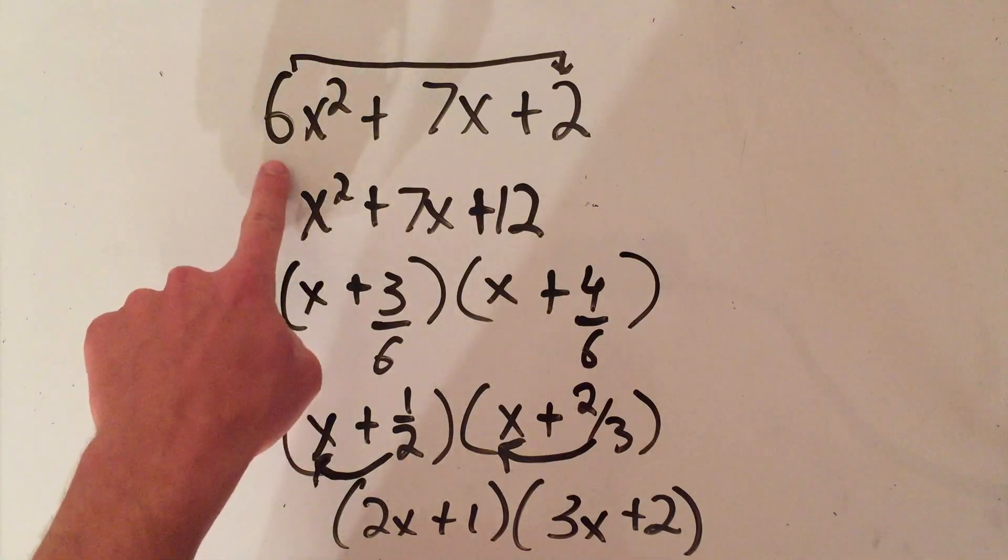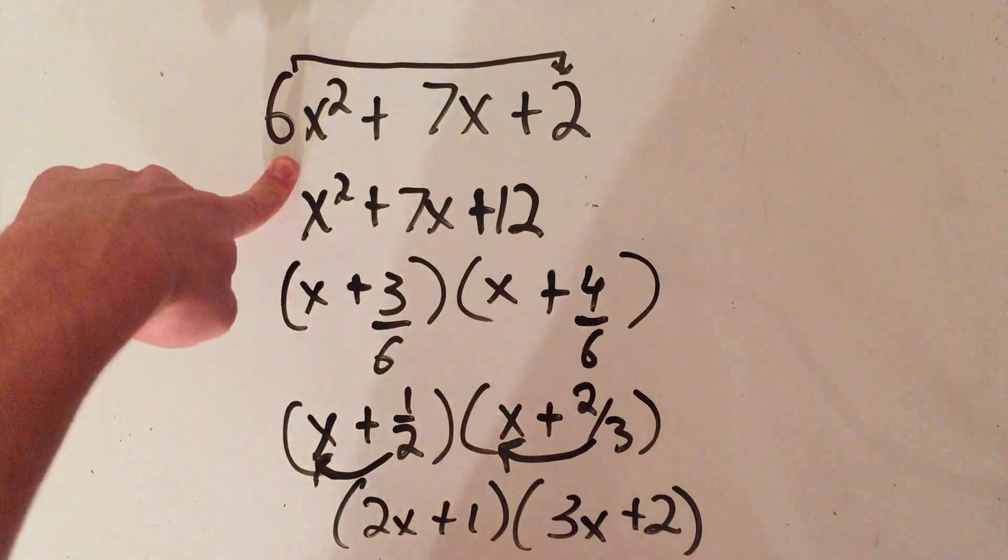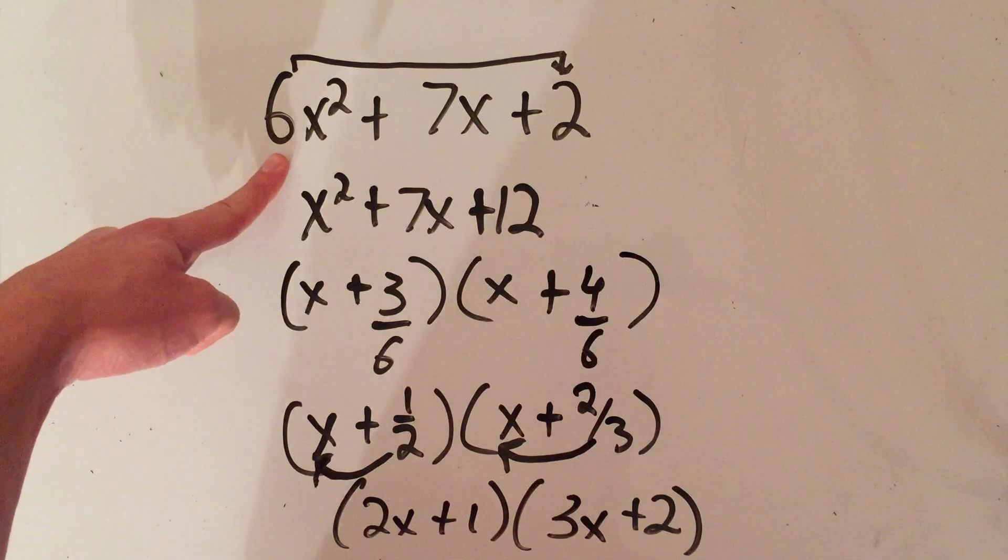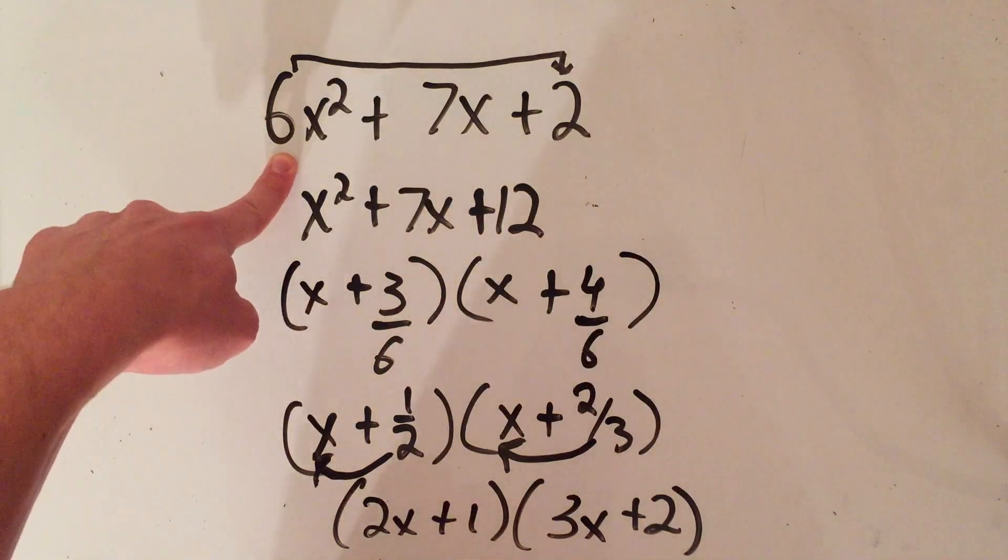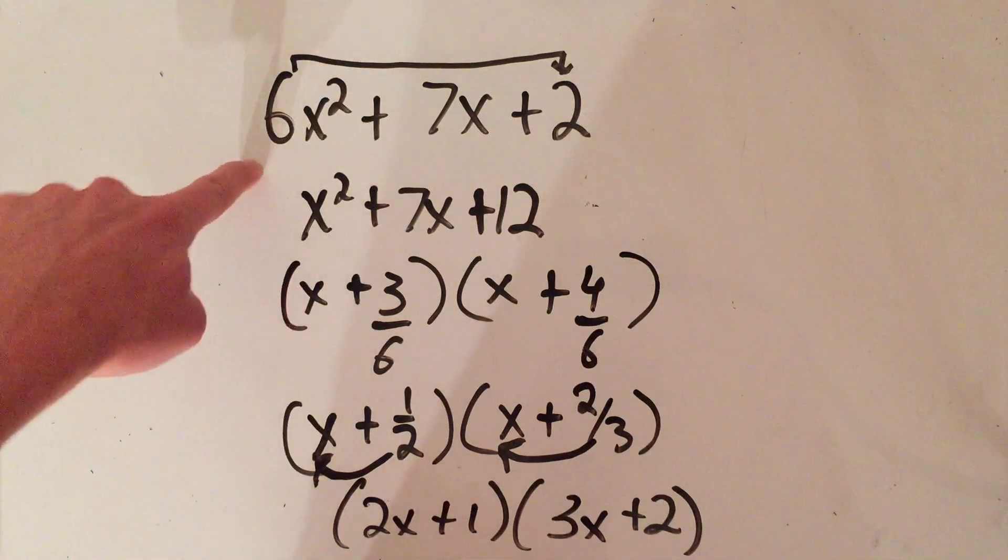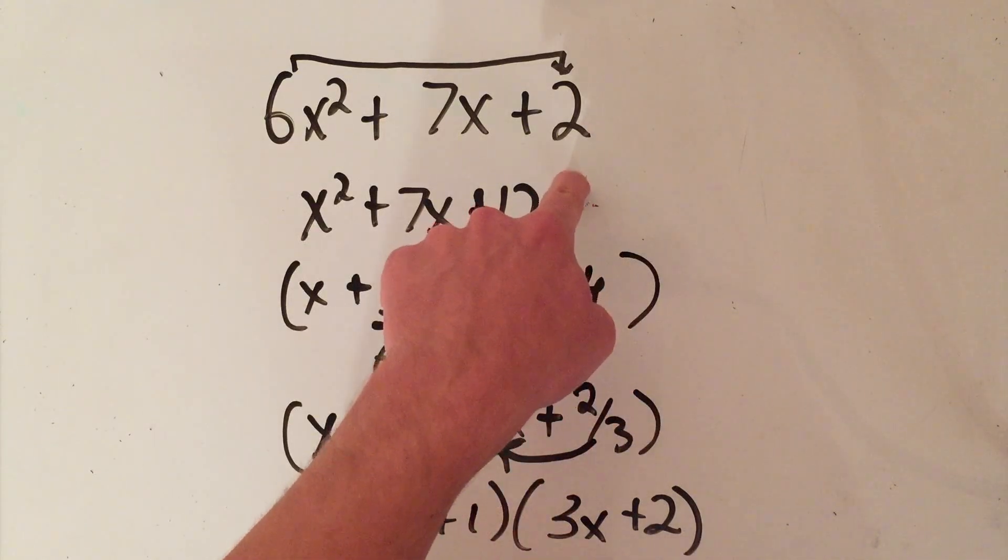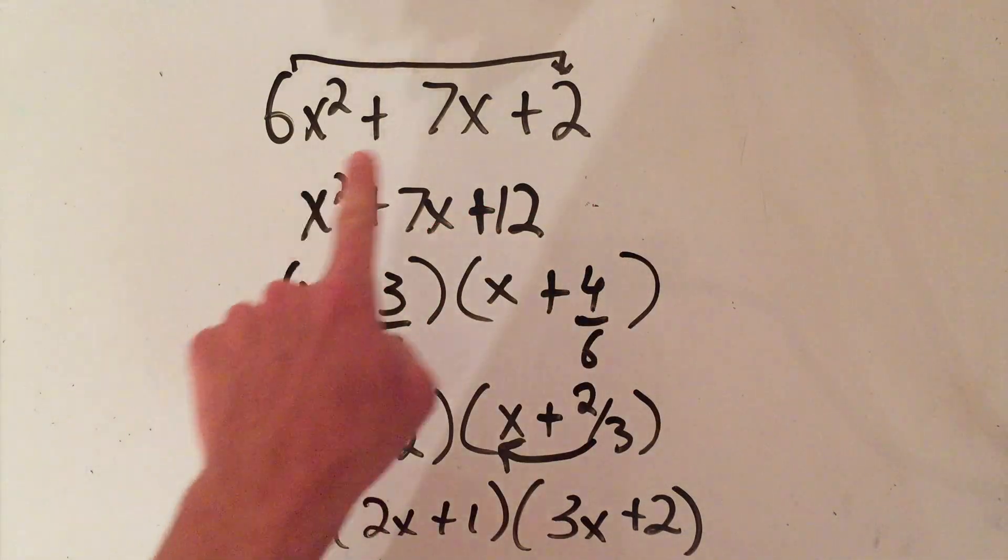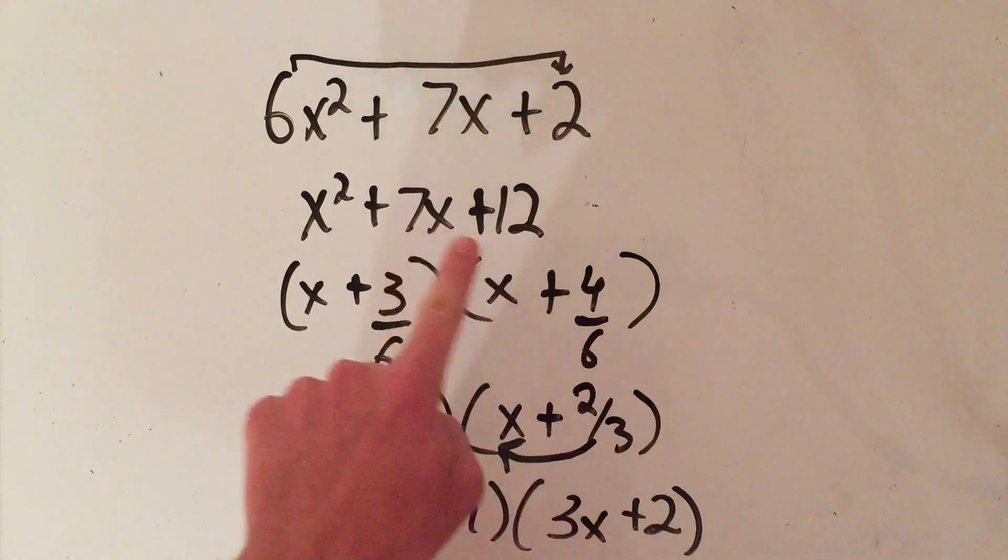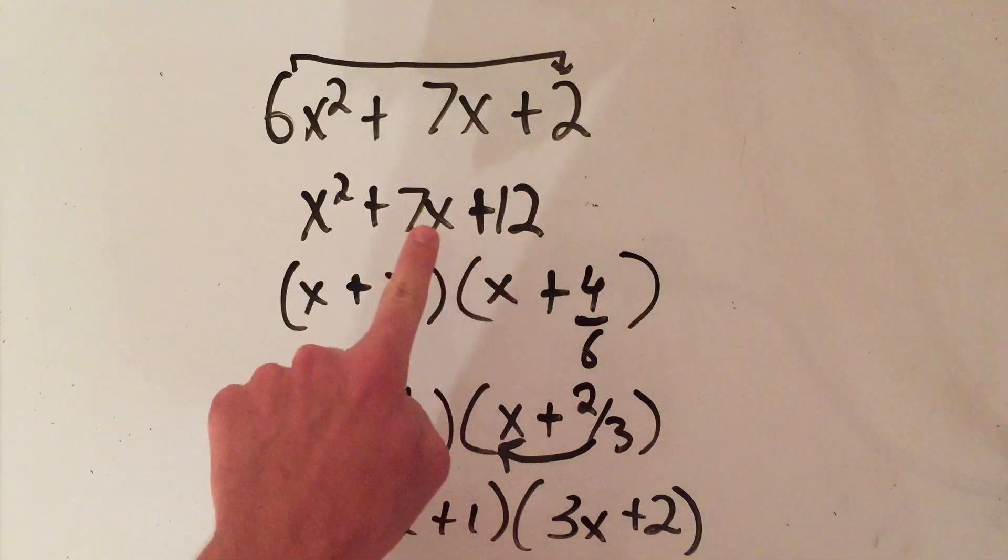So take this number - whenever you're factoring a trinomial that doesn't have a leading coefficient of 1, we do the leading coefficient, in this case 6, times the constant number, in this case 2, to get 12. Factor this like you normally would: look for two numbers that multiply to 12 and add to 7.